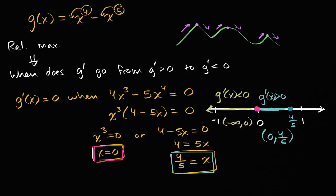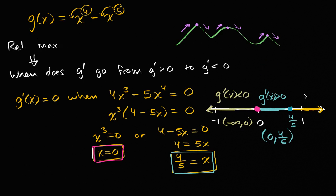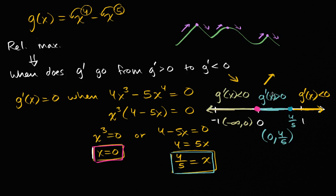To the right of four fifths, let's try x equals one. G prime of one equals four minus five, which equals negative one. So g prime of x is less than zero and our function is decreasing. So our function is decreasing on the left, increasing in the middle interval, and decreasing again on the right. At what critical point are we going from increasing to decreasing? That's at x equals four fifths — so we have a relative maximum at x equals four fifths.